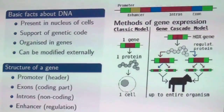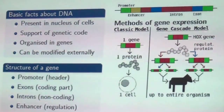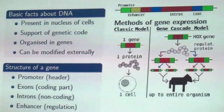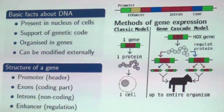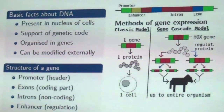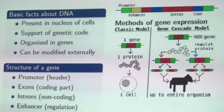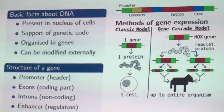Beyond simple gene-to-protein expression, you can also have what we call hox genes or high-level genes that create proteins which help regulate the expression of other genes, creating a gene cascade. This means that one gene could control a large part of the structure of an organism — and we could use that to rebuild a leg or a tail.